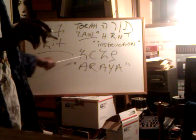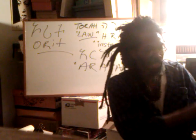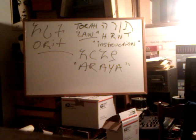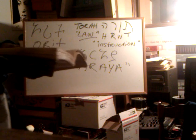Orit comes from the word Araya. Now, if we look into the dictionary — the Concise Amharic Dictionary, the Wolfe-Lessler Concise Amharic Dictionary — this is probably one of the readily available ones that you can get a copy of for your own studies.